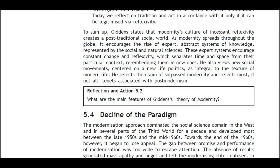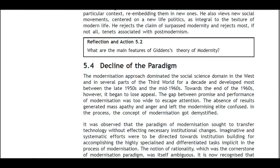The increased reflexivity is made possible by the development of networks of mass communication and the expansion of the time-space dimension. Social practices are constantly investigated and changed on the basis of newly acquired information. Giddens states that modernity's culture of incessant reflexivity creates a post-traditional social world. As modernity spreads globally, it encourages the rise of expert abstract systems of knowledge. He rejects the claim that we have surpassed modernity and rejects most tenets associated with post-modernism.